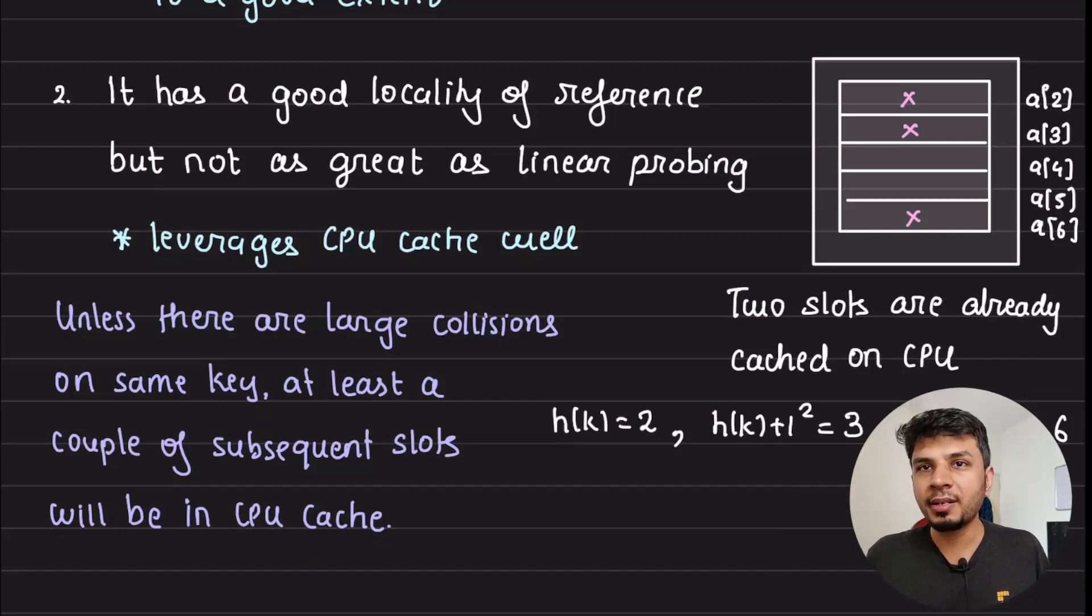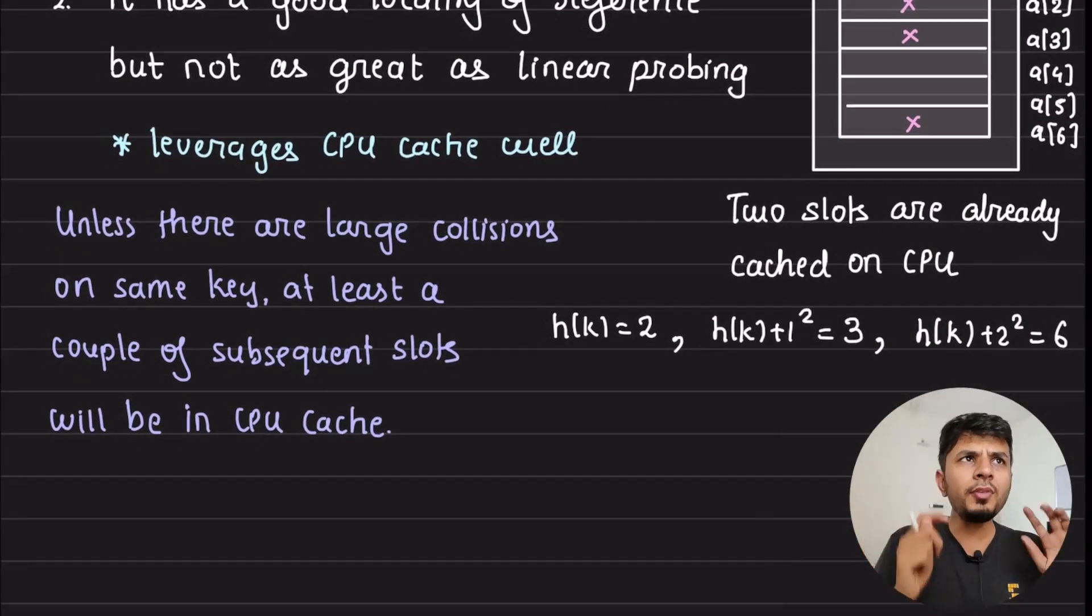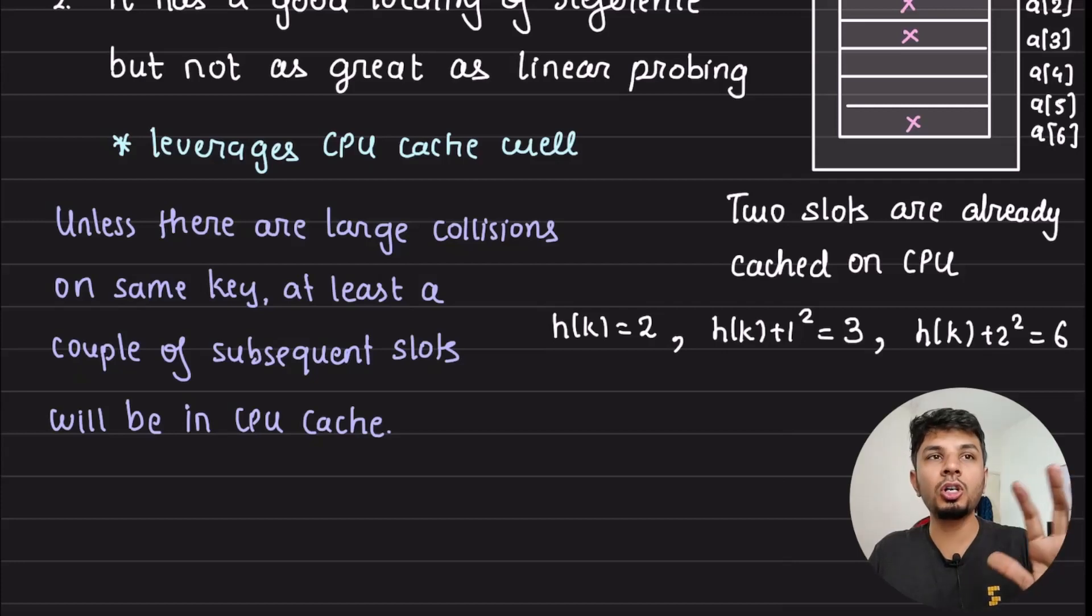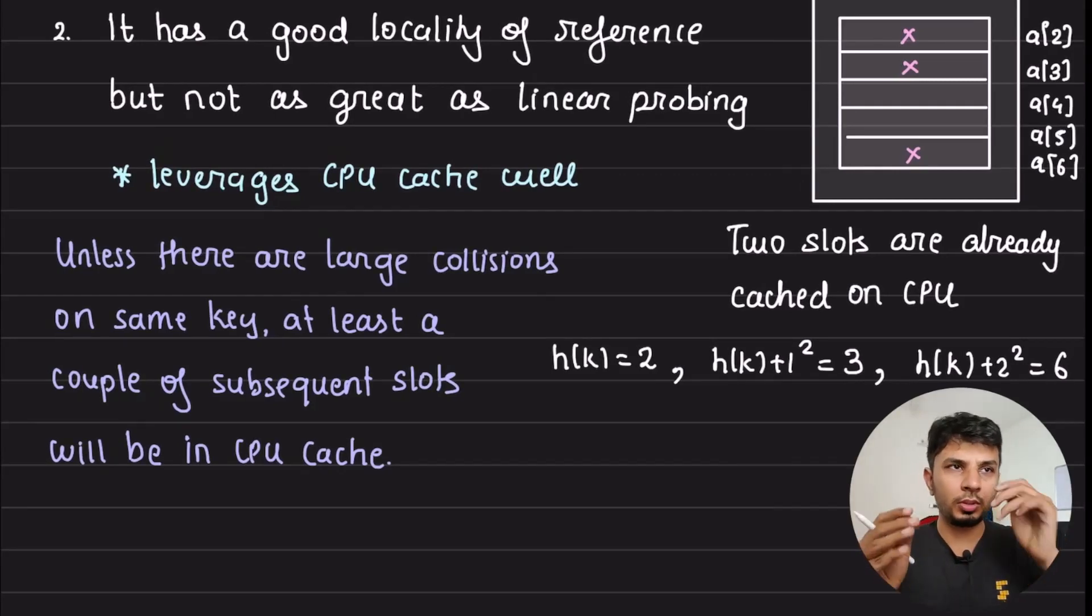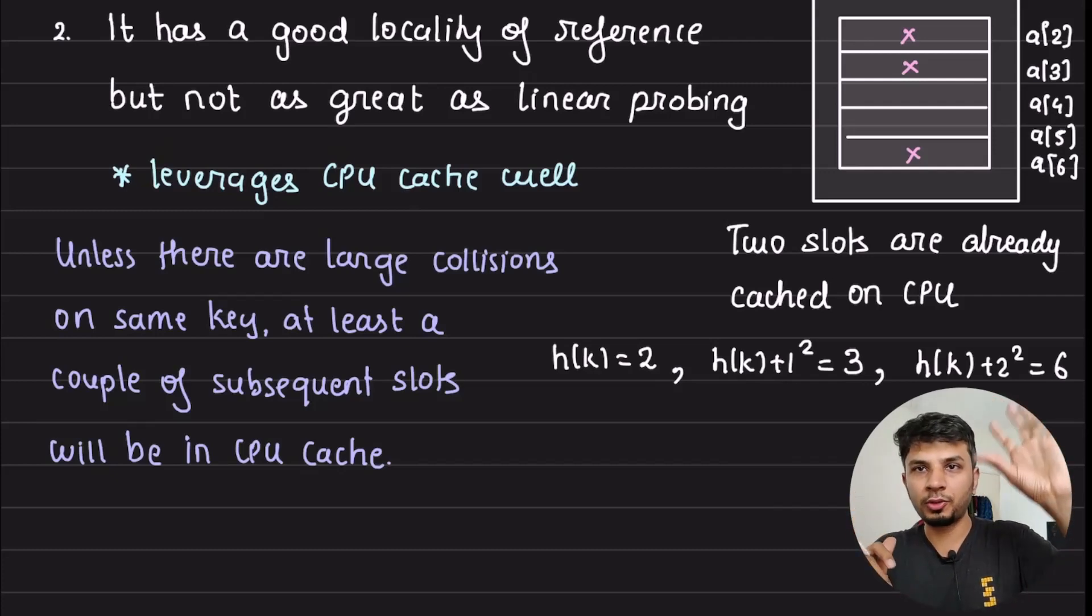But, quadratic probing also does a fair job to it, because what you are seeing is, if your hash function is good enough that it does not cause a lot of collisions, then here also you are leveraging a good CPU cache. Because, if you think about quadratic probing, so your next available slots would be, let's say you are accessing A[2], and if A[2] is collided, you are taking a quadratic leap. So, A[2], then you will go to A[3], as in plus 1, and then A[6], which is plus 4. So, 1 square, 2 square, 3 square, and so on. So if you talk about a small memory page of 5 slots, you are bringing A[2], A[3], A[4], A[5], A[6], so you are already bringing in 3 slots that you may find your key in.